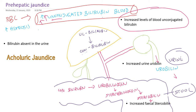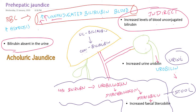Investigations will show elevation of indirect bilirubin. Since unconjugated bilirubin is not water-soluble, it is not filtered by the kidney, so bilirubin will not be seen in the urine. In obstructive and hepatic jaundice, bilirubin can appear in the urine and the urine may be dark yellow, but in prehepatic jaundice the urine color is normal due to the absence of bilirubin. Prehepatic jaundice is therefore also called acholeric jaundice.